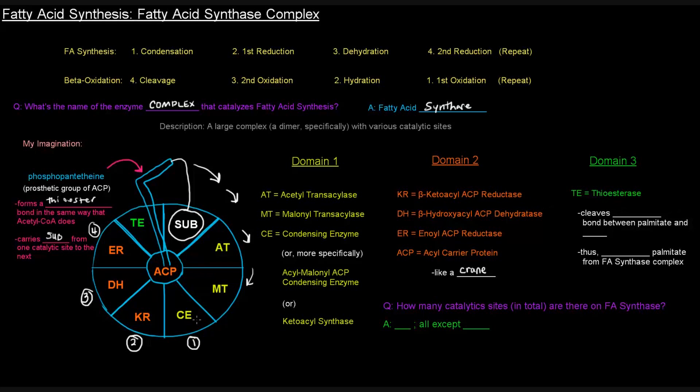At a certain point, we'll create palmitate, right? After these rounds, after we've had enough of these rounds to yield palmitate, once palmitate is attached to the ACP, what happens is domain three with the thioesterase, what it does is it cleaves the thioester bond between palmitate and the ACP, and what that does is that frees up palmitate from the fatty acid synthase complex. So then, after all that has happened, you release that fatty acid into the cytosol.